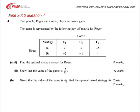We're told that we have two people, Roger and Corrie, who are playing a zero-sum game and that the payoff matrix for Roger is given in the table. We're asked in the question to find the optimal mixed strategy for Roger and show that the value of the game is 7 thirteenths. And given that that's the value of the game, find the optimal mixed strategy for Corrie.